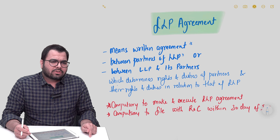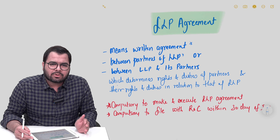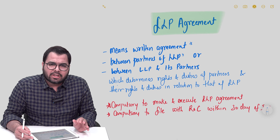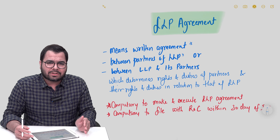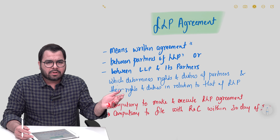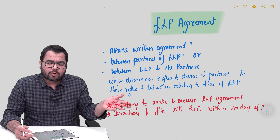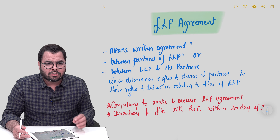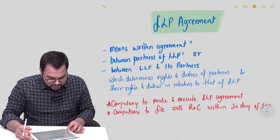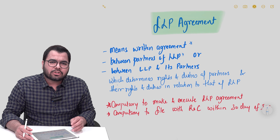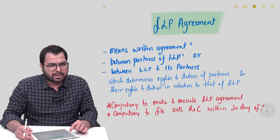The phrase 'in relation to that LLP' is used because there are many scenarios where one individual is a partner in one LLP, a director in another company, and an owner of a proprietor firm. So the rights and duties related to that particular LLP are defined in the LLP agreement. Along with that, the general duties and rights of the partners are also determined in the agreement.